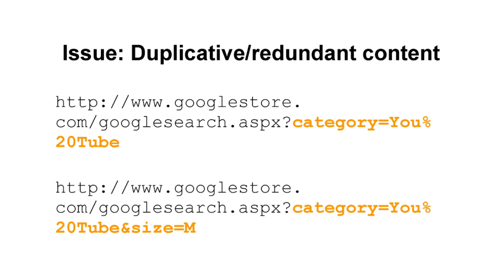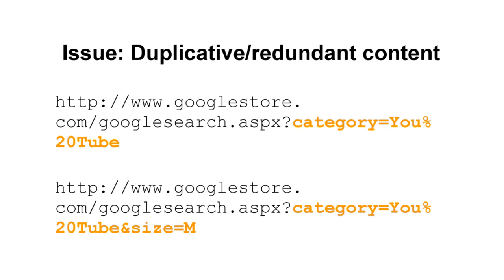You can see how Googlebot might want to be more efficient in crawling by looking at these two URLs. The first one says category equals YouTube — let's say that URL brings Googlebot to 20 unique items on the page. But on the second URL, it's category equals YouTube and size equals medium. So it's the exact same items, but now filtered down to five because of the size equals medium parameter. Google would rather just crawl the first URL and reach all 20 of the items rather than crawling both URLs and seeing a redundant five items.